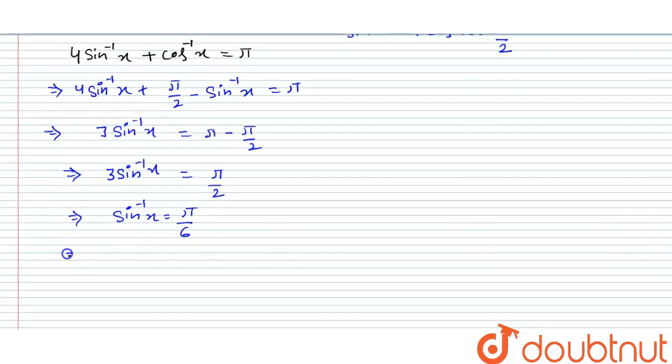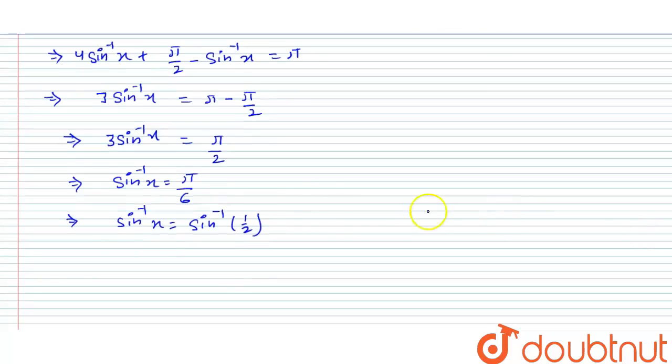Now, sin inverse x equals pi upon 6. We know that sin inverse of 1 upon 2 is equal to pi upon 6. So from here, the value of x would be equal to 1 upon 2, which is our final answer.